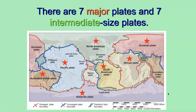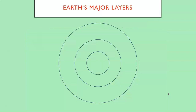We then have seven intermediate-size plates, shown here with green stars — we'll look at these in more detail later. Take a moment to see if you can label the major layers of Earth on a diagram like this.